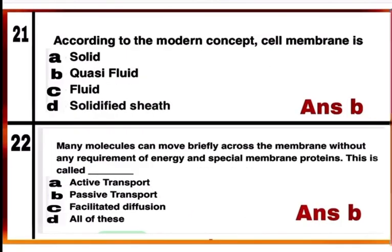Question 21: According to the modern concept, the cell membrane is option B — quasi-fluid. According to the fluid mosaic model, the lipid is quasi-fluid, meaning partly liquid and partly solid, which enables lateral movement of proteins within the overall bilayer.